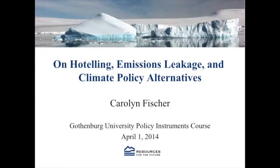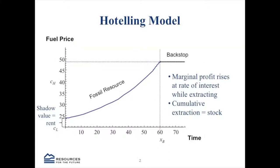A lot of this is based on the hoteling model. So there's an example of a hoteling model with a backstop resource. Say you have a fossil energy resource, and you also have some alternative energy that you can turn to at some point. We call it a backstop because we're assuming that it can be scaled up at constant marginal cost.